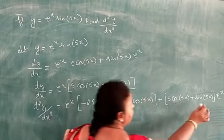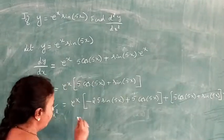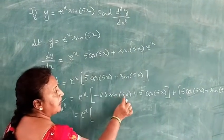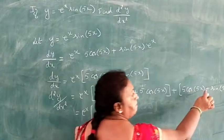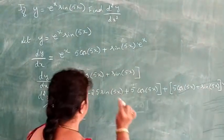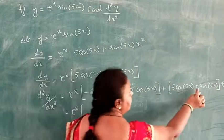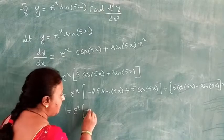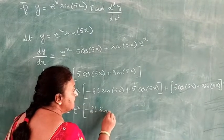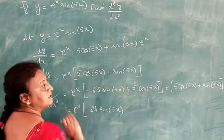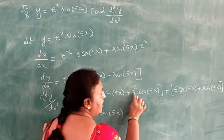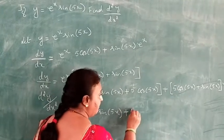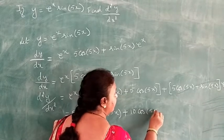Taking e to the power x as common factor and simplifying: minus 25 sin 5x plus sin 5x gives minus 24 sin 5x, and 5 cos 5x plus 5 cos 5x gives plus 10 cos 5x.